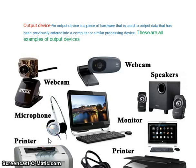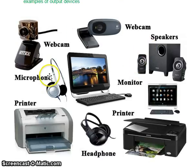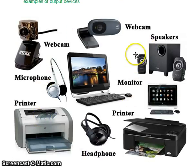On the screen are a range of output devices. An output device is a piece of hardware that is used to output data that has been previously entered into a computer or similar processing device. These are all examples of output devices such as a microphone, printer, headphones, monitors, webcams, speakers, and so on.